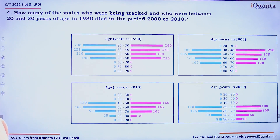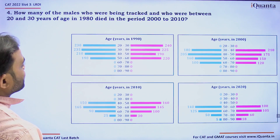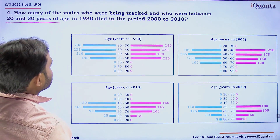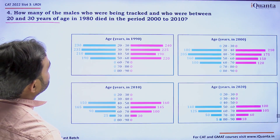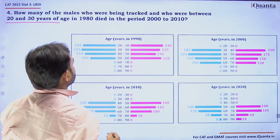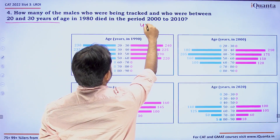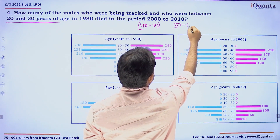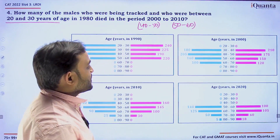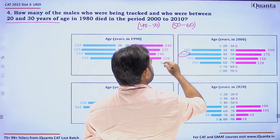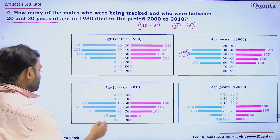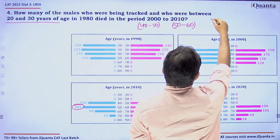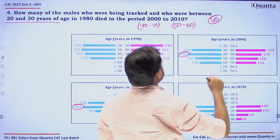Question 4: How many males who were being tracked and who were between 20 and 30 years of age in 1980 died in the period 2000 to 2010? Those aged 20–30 in 1980 would be 40–50 in 2000 and 50–60 in 2010. Males aged 40–50 in 2000 = 205. Males aged 50–60 in 2010 = 165. The difference is 205 − 165 = 40. So 40 males died between 2000 and 2010.